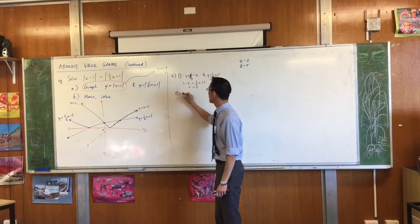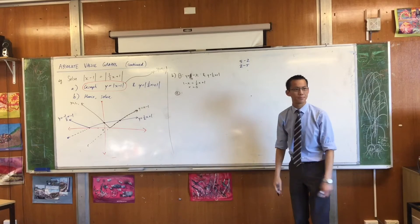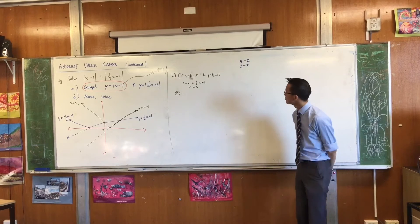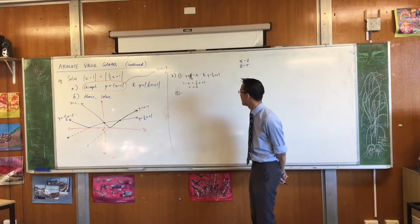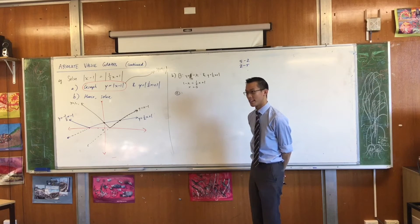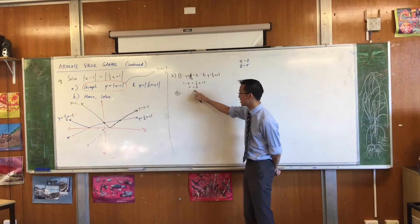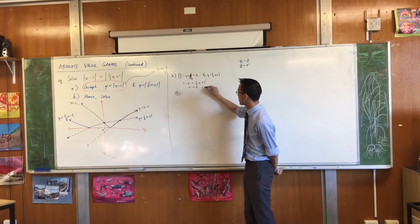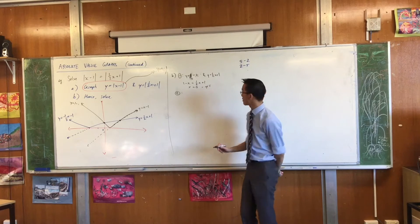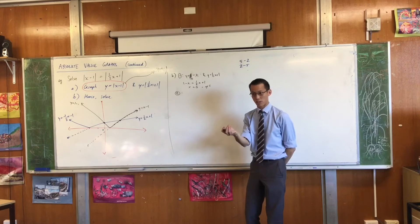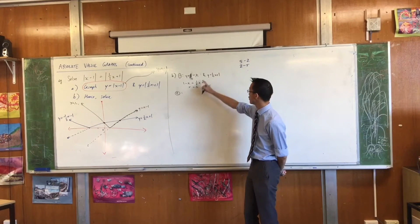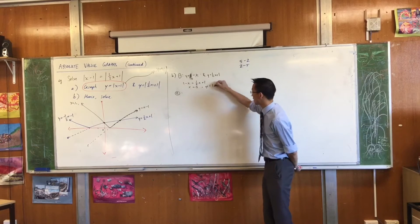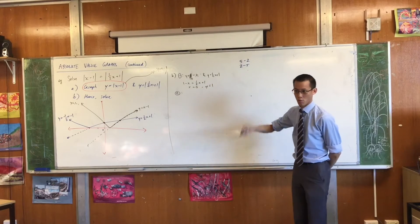And my graph kind of already clued me into that fact, because there's the origin. So there's one solution. How am I going to find the other? What am I going to put together?